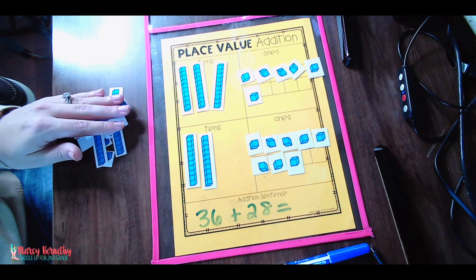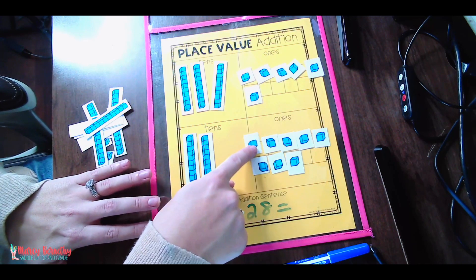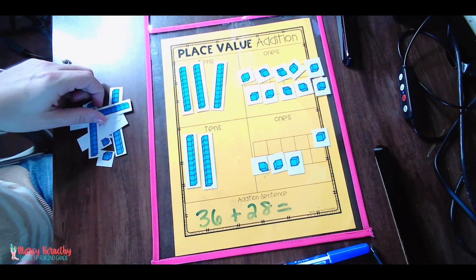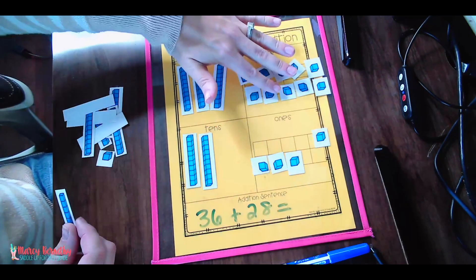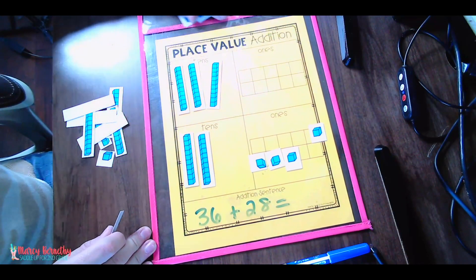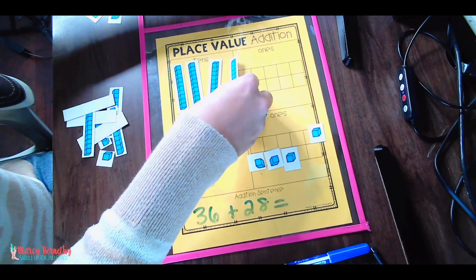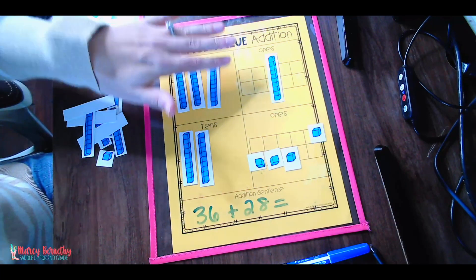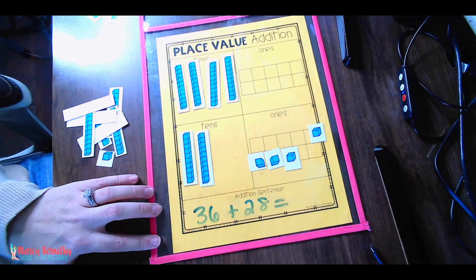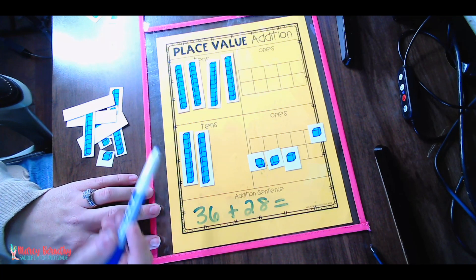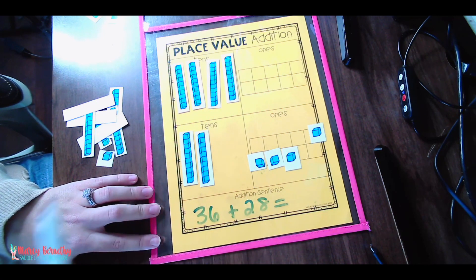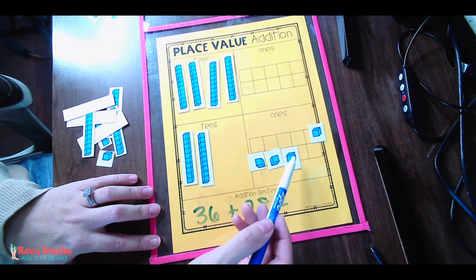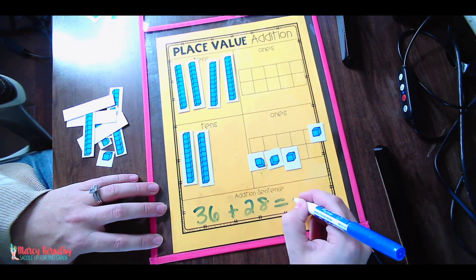When it's more than 10, we need to exchange. So I am going to make this equivalent to 10. And we are going to actually take these 10 ones blocks, and we are going to take them away and physically exchange them out for a tens block. Now we still have the number 14. We're just creating it a different way. Now we can count our tens: 10, 20, 30, 40, 50, 60. How many ones do we have left? 4. 1, 2, 3, 4. So our answer is 64.